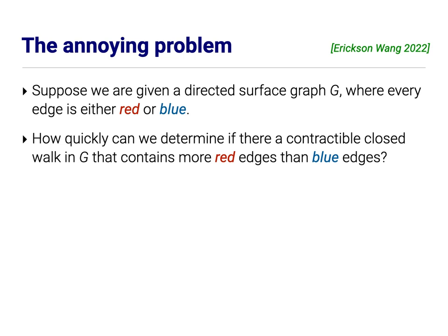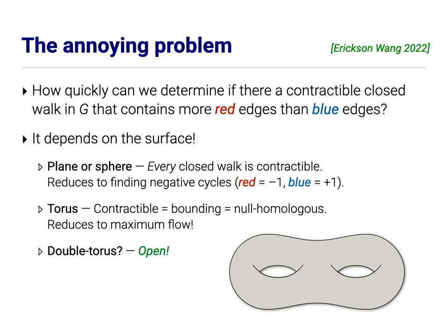Here's the annoying problem. Suppose we're given a directed graph on a surface and every edge is colored either red or blue. I want to search through this graph until I can find a closed walk that is contractible on the surface and it has more red edges than blue edges. How quickly can I do this? So this is a problem that came up in a technical paper that my PhD student Yipu Wang and I published last year. And for certain types of surfaces, we know exactly how to do this. So if the surface that the graph is drawn on is the plane or the sphere, then every closed walk is contractible. And so really what we're asking, is there a cycle that has more red edges than blue edges? And by giving the red edges weight negative one and the blue edges weight positive one, this becomes finding negative cycles in a planar graph. And this can be done in near linear time using one of those shortest path algorithms that I referred to earlier in the talk.